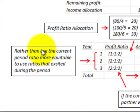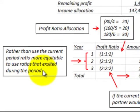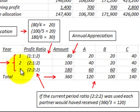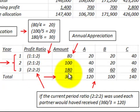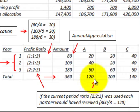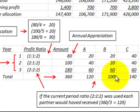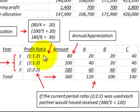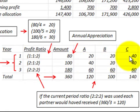Rather than use the current period ratio alone, it's more equitable to use the ratios that existed during each period. Had we based it strictly on year 3, with a ratio of 2 to 2 to 2, the gain of $360,000 would be divided evenly — $120,000 to each partner. But using the year 1 profit ratio, partner A would get $20,000, B $20,000, and C $40,000.